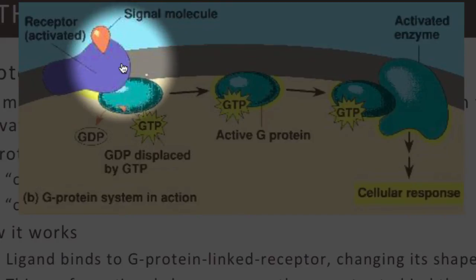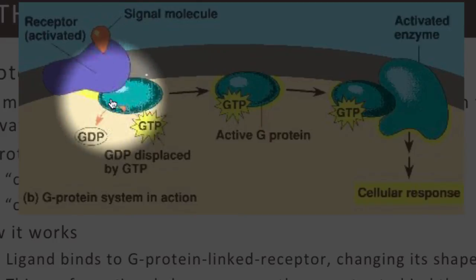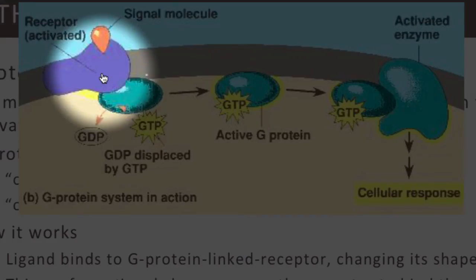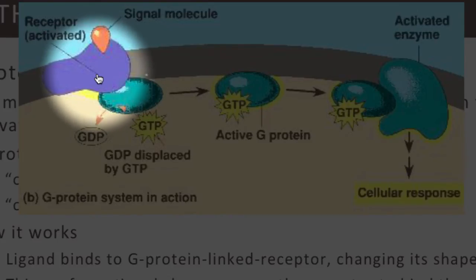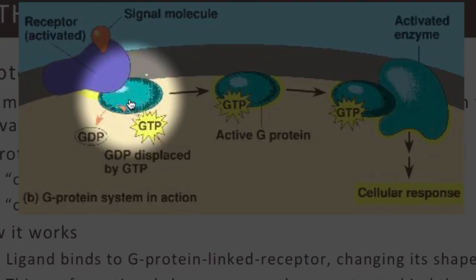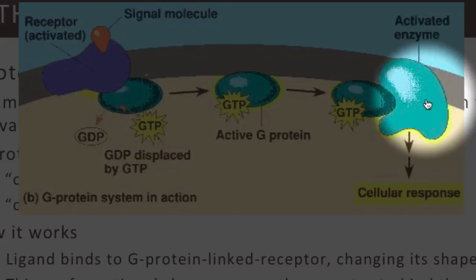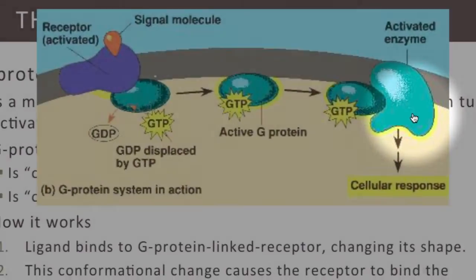Here's an illustration of a G-protein-linked receptor. The red teardrop-shaped molecule is the ligand, and the purple molecule is a receptor embedded in the plasma membrane. It's a G-protein-linked receptor because it's associated with this green G-protein. When the ligand binds the receptor protein, this triggers a change in the receptor protein shape, which causes the receptor to add a GTP to the G-protein. This fully activates the G-protein, which then slides down the plasma membrane and activates an enzyme that's also embedded in the plasma membrane.